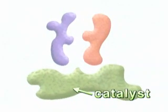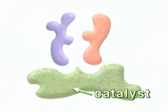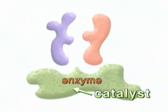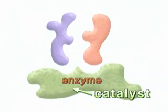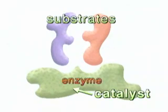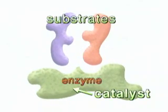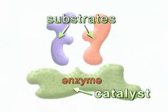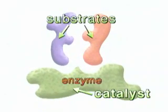The catalysts in cells are proteins called enzymes. The molecules entering into reactions are called substrates. Enzymes catalyze both endergonic and exergonic reactions.